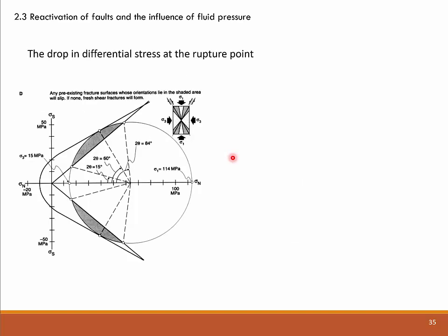Let's assume an unfractured rock attains stress conditions sufficiently large to cause failure — for instance, sigma_1 = 114 MPa and sigma_3 = 15 MPa. In a rock defined by the Coulomb envelope and the corresponding parabolic envelope, such a rock would fail and produce fractures at a two-theta angle of 60 degrees. Conjugated fractures would form with opposite shear senses, as illustrated here.